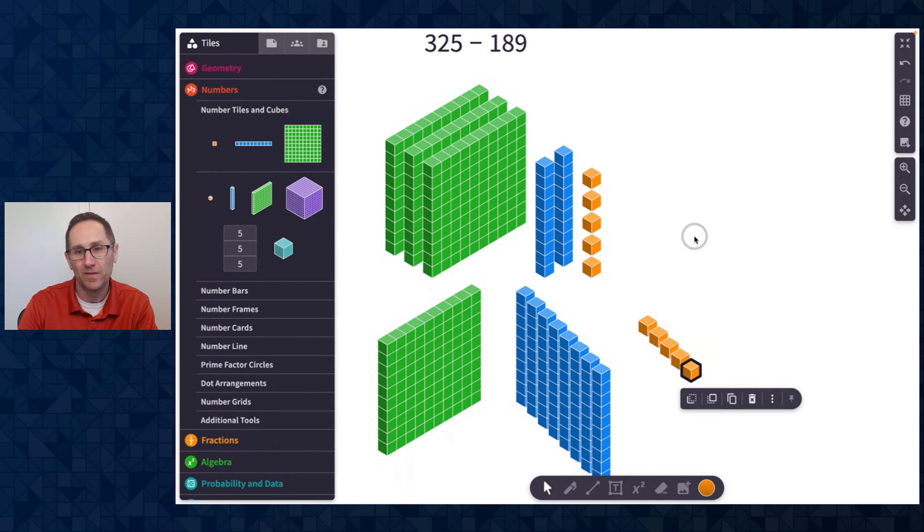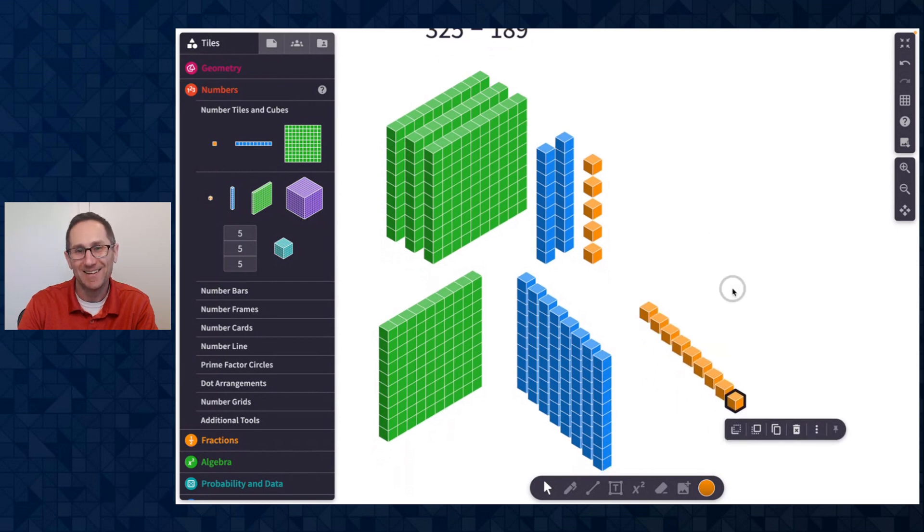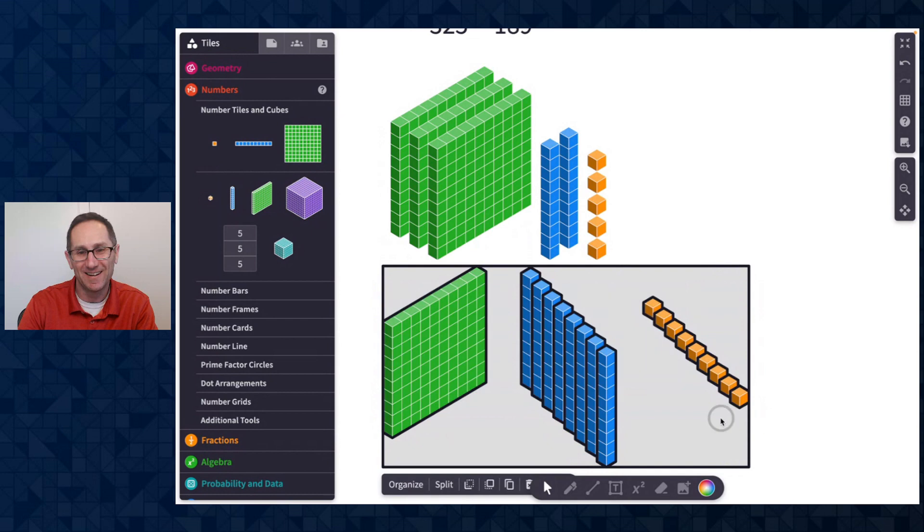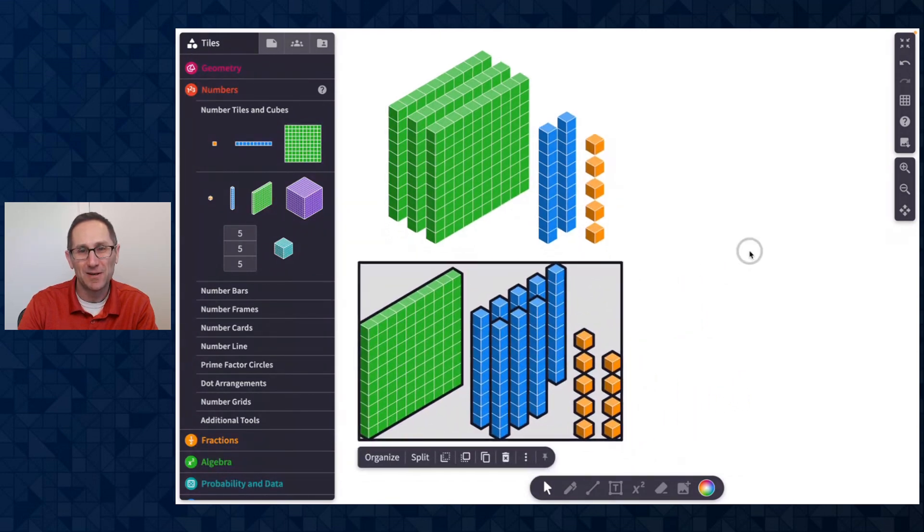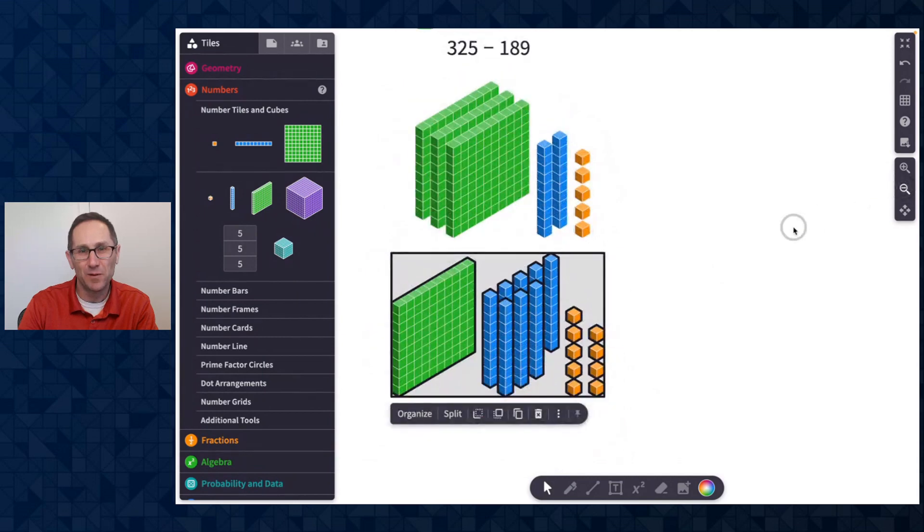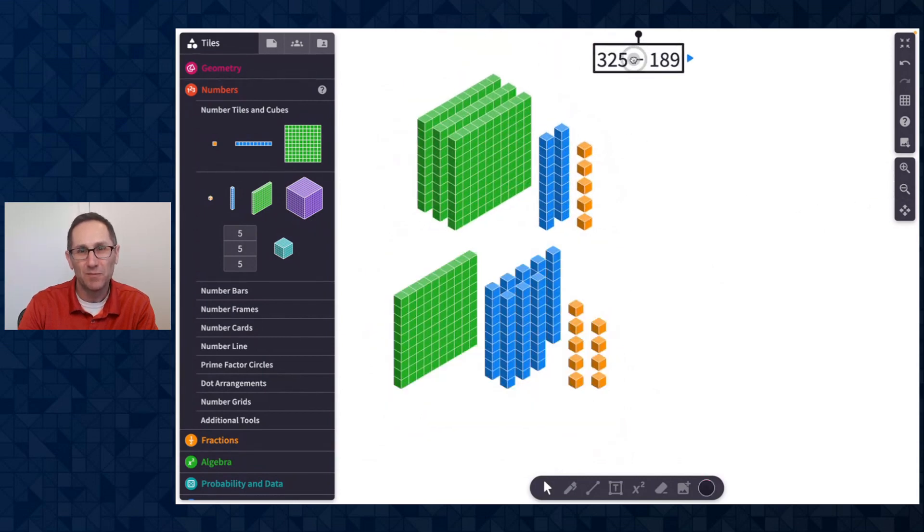There's 1, 2, 3, 4, 5, 6, 7, 8, 9. So there is 189. I'm going to organize those. And here are my two numbers. I'm going to zoom out a little bit more to give myself some room. Maybe center this and make it a little bit bigger.